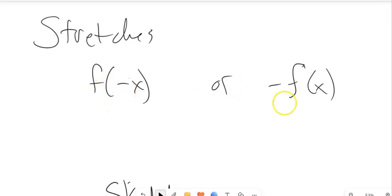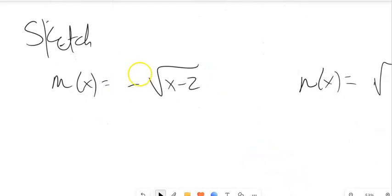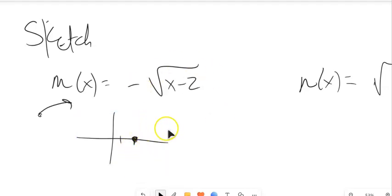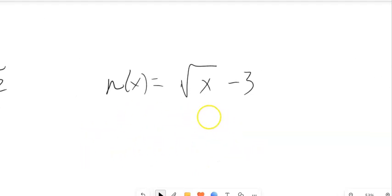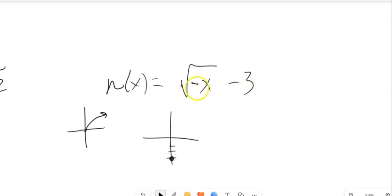Negating outside the function reflects it vertically (up/down); negating inside reflects it horizontally (left/right). For negative square root of x minus 2: the minus 2 moves it right 2, and since it's negated outside, instead of over 1 up 1, it goes over 1 down 1. For square root of negative x minus 3: the parent function moves down 3, and negating inside means instead of going over 1 up 1 to the right, it goes back 1 up 1 — reflecting horizontally.